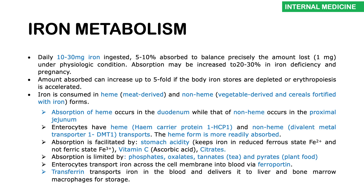Ascorbic acid (vitamin C) and citrates facilitate iron absorption. Things that limit absorption include phosphates, oxalates, tannates found in tea, and phytates found in some plant foods. Inside the gut, iron enters via a channel known as ferroportin, and once it enters the bloodstream it is bound to transferrin, which transfers iron to the reticuloendothelial system for erythropoiesis and recycling.